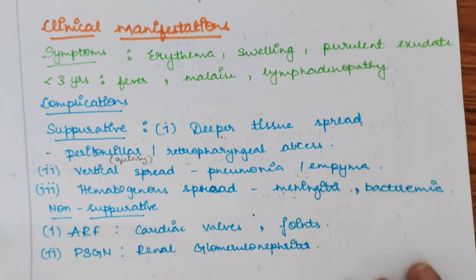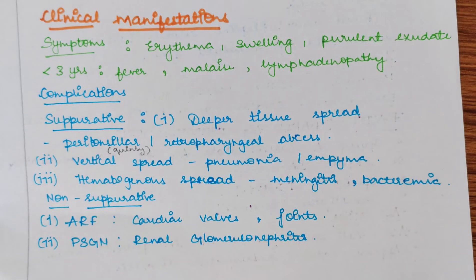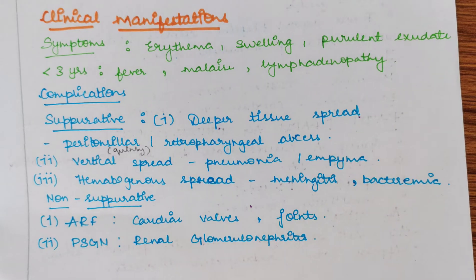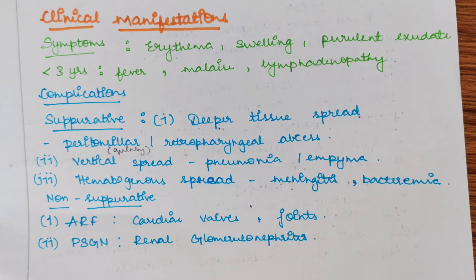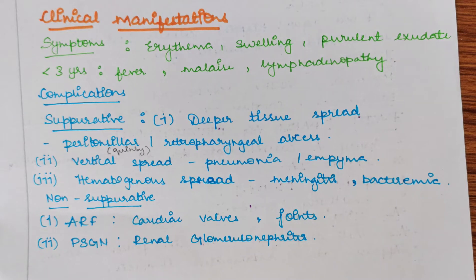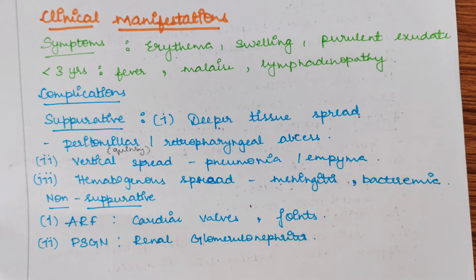The complications are two: suppurative complications and non-suppurative complications. The suppurative complications include deeper tissue spread, vertical spread, and hematogenous spread. Deeper tissue spread means the infection spreads into deeper tissues, leading to peritonsillar abscess or retropharyngeal abscess. The peritonsillar abscess is also called quinsy. Vertical spread means it spreads downwards towards the lungs, causing pneumonia and empyema.